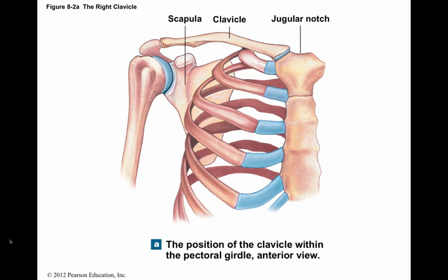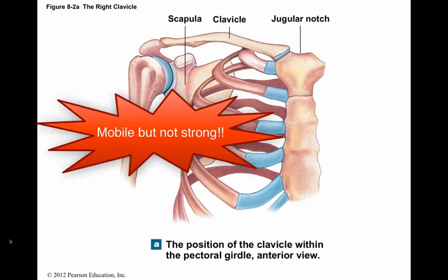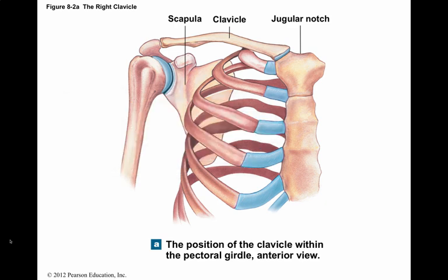Only skeletal muscles support and position the scapula, with no direct bony connections or ligaments connecting them to the thoracic cage. As a result, the shoulders are extremely mobile but not very strong. Movements of the clavicles and scapulae position the shoulder joints and provide a base for arm movement. The surfaces of the scapula and clavicles are important sites for muscle attachment, and bony ridges and projections on the bones mark the attachment sites of major muscles.